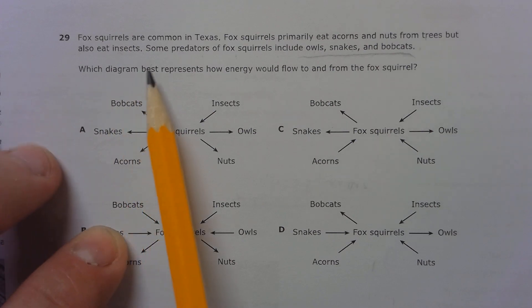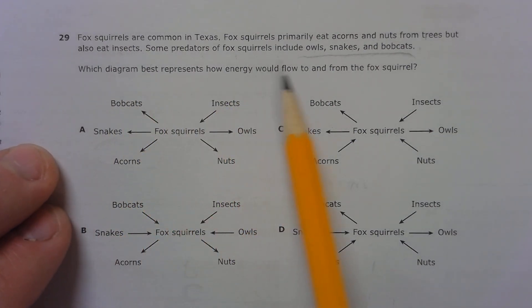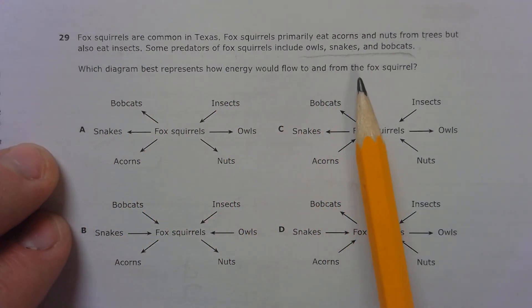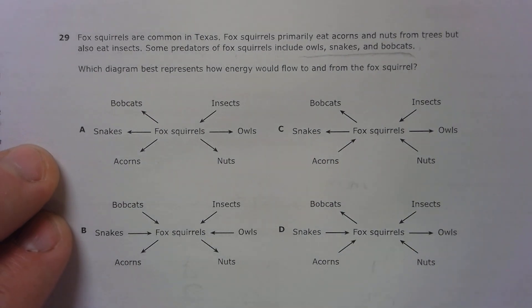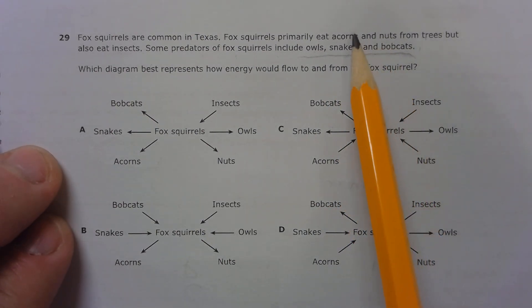So which diagram best represents how energy would flow to and from the fox squirrel? We know that the energy has got to come from the acorns and nuts.